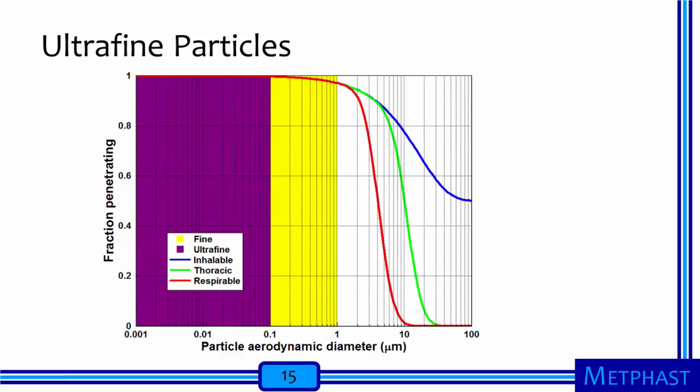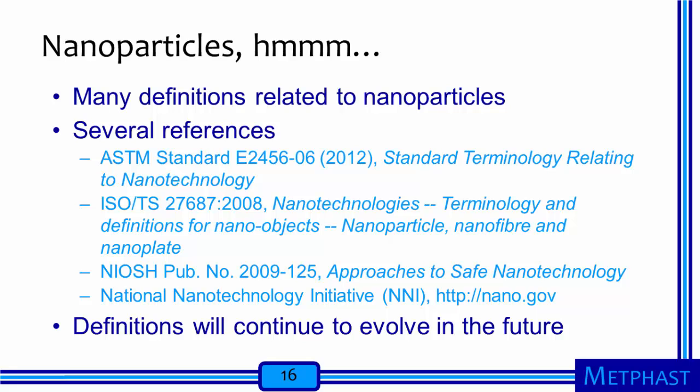We've talked about a bunch of different size-based definitions of particles, so where do nanoparticles fit in? There are many definitions to consider. Relevant documents include ASTM Standard E2456-06 on Standard Terminology Relating to Nanotechnology from 2012, ISO Standard 27687 on Nanotechnology Terminology and Definitions from 2008, a NIOSH publication from 2009 titled Approaches to Safe Nanotechnology, and the website of the National Nanotechnology Initiative, nano.gov. As nanotechnology is still an emerging field, we should expect that our definitions will continue to evolve.